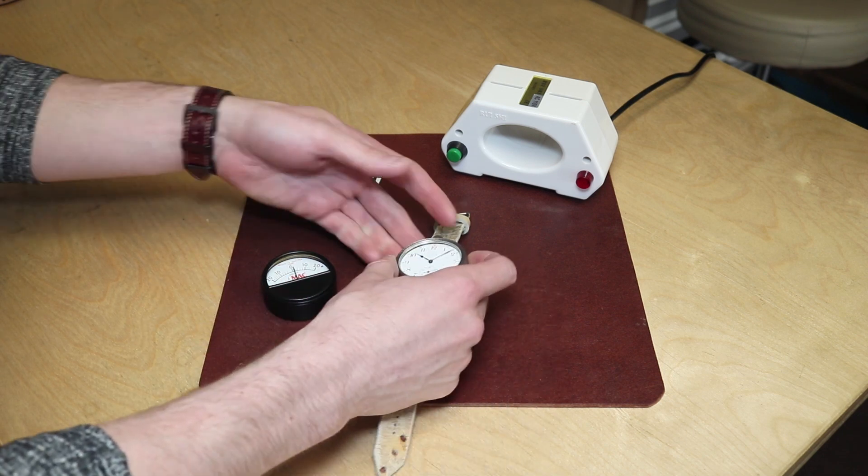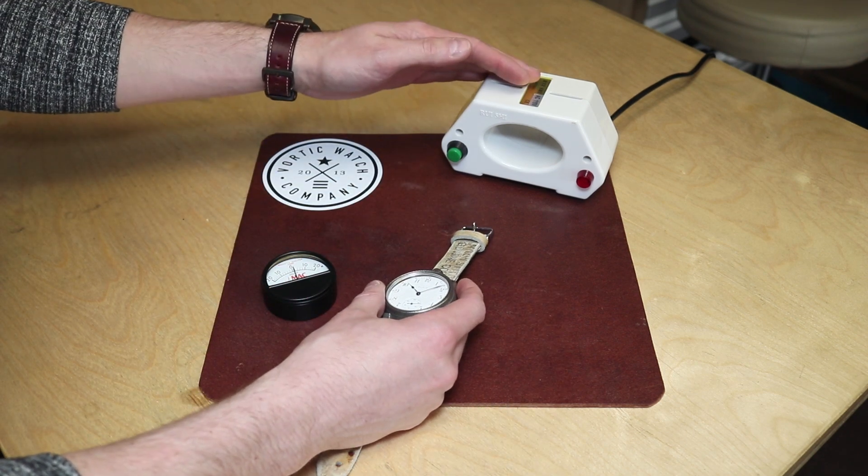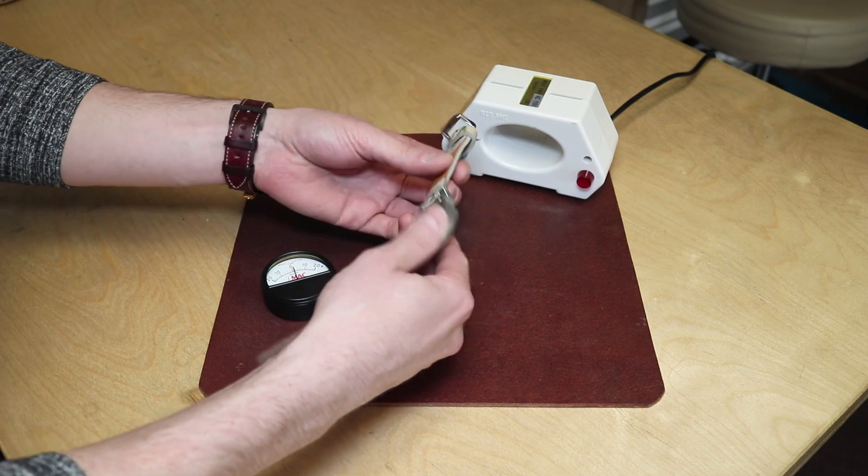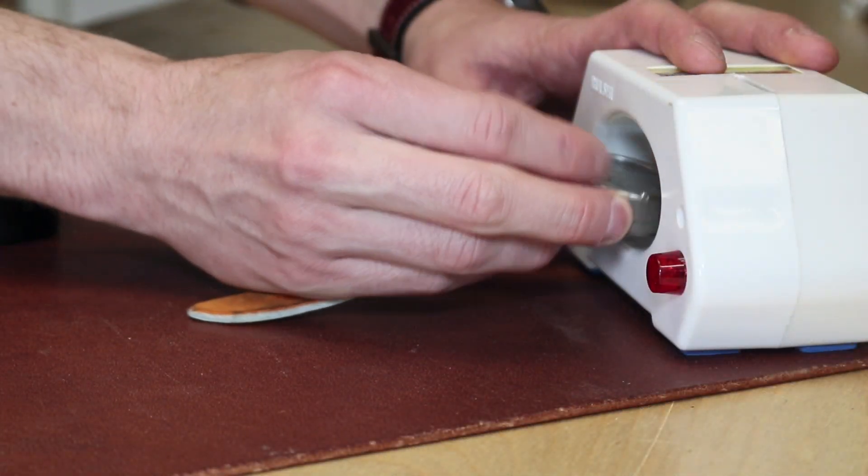If you want to do it at home or do it yourself though, get yourself a demagnetizing machine and put the entire watch inside your machine all the way in.